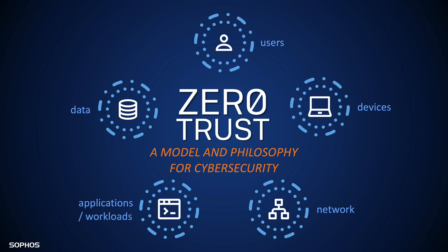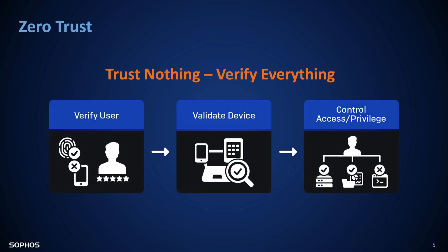Each device, user, and resource literally becomes its own micro-perimeter that can only allow access once trust is verified and validated by multiple sources. But even then, it's only temporary — trust can be revoked at any time. Trust is only established after the user's identity is verified through multi-factor authentication and the device is validated as compliant and healthy. That information is then used to control access and privilege to network resources. It's like the old saying: trust is earned, not given. And that's absolutely how Zero Trust works.